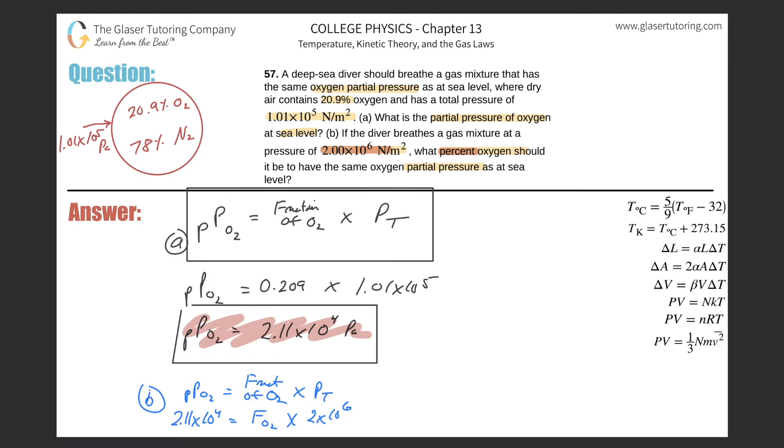2.11 times 10 to the fourth divided by 2 times 10 to the sixth, and here we have a fraction. The fraction of O2 will now be equal to 0.0106.